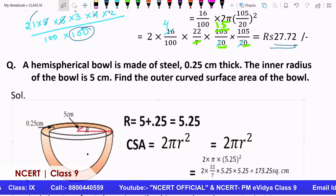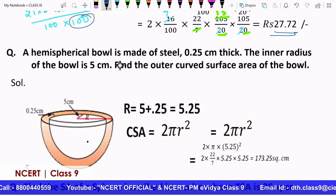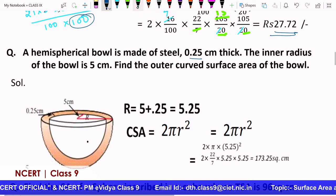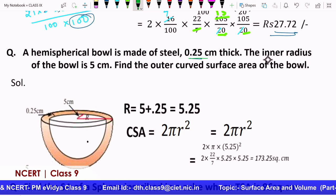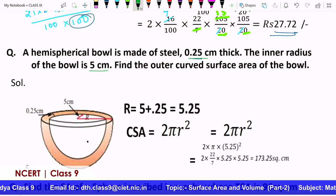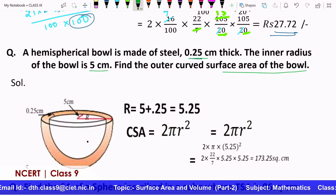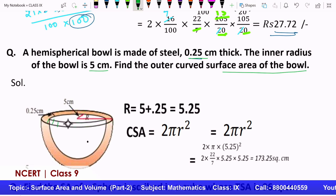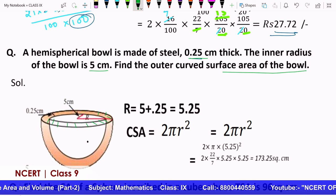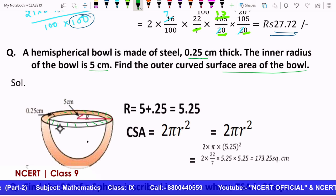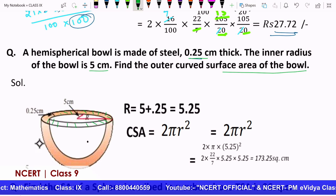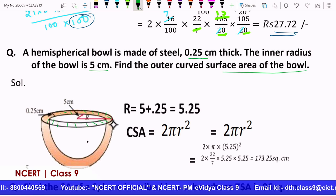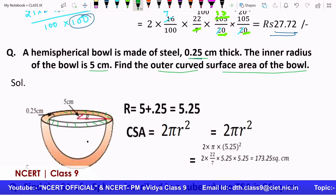Now, we have the next question. The next question says the hemispherical bowl is made of steel with a thickness. There is a thickness in that bowl. The inner radius of the bowl is 5 centimeters. You have to find the outer curved surface area of this bowl. Now, can you visualize this? There's a bowl with thickness, this is actually the thickness of that bowl. So therefore, what we find is it has an inner part, this is an inner part, and there is an outer part.